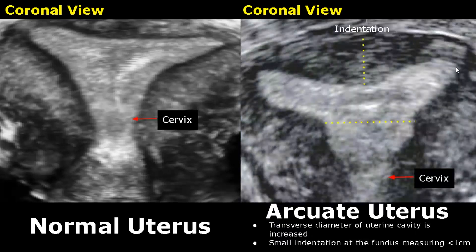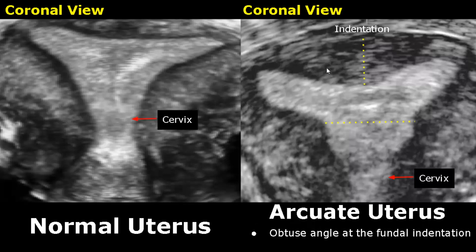An arcuate uterus is the least serious type of congenital uterine abnormality. The transverse diameter of the uterine cavity is increased and a small indentation is present at the fundus, measuring less than 1 centimeter. An obtuse angle is formed at the fundal indentation. An arcuate uterus is actually considered a normal variant of the uterus and has very little association with reproductive failure.